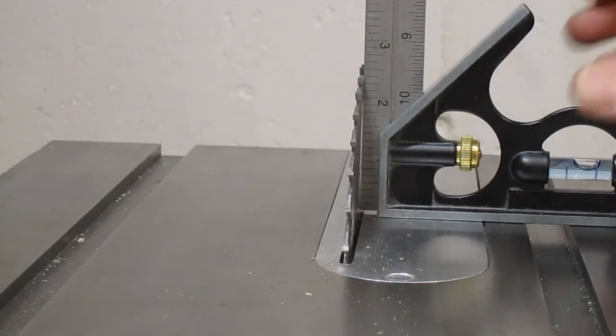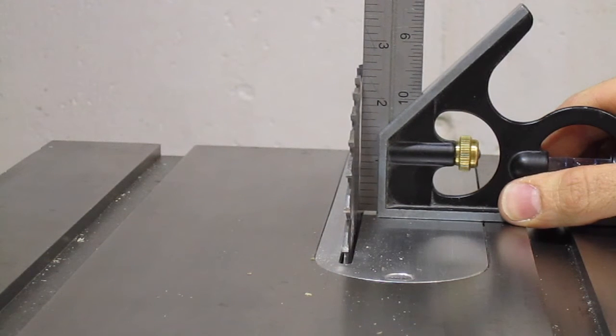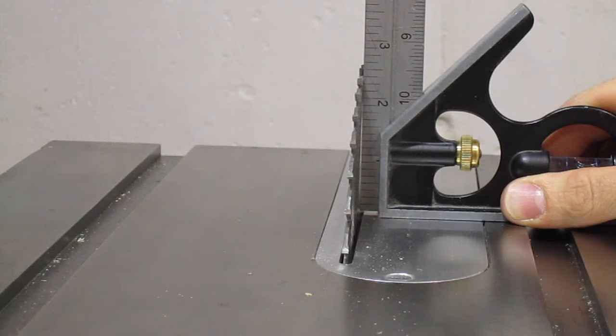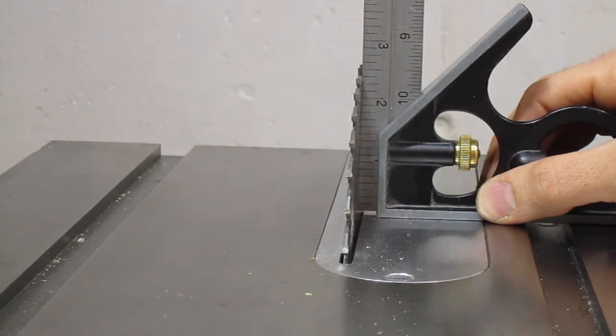Okay, with that stop adjusted, now I can get it to slightly past ninety degrees. So, here we go to ninety, and it can go a little bit past as well. So this will allow us to dial it in exactly to ninety degrees.